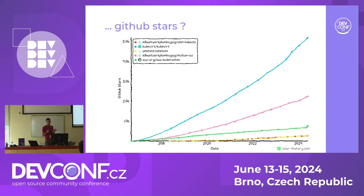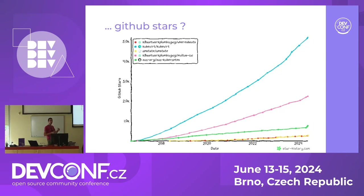One metric that is kind of relevant — I don't think it's the correct metric, but it's easy to find online — is a chart of GitHub stars on a bunch of projects I collaborate with. Whereabouts is one at the bottom, nmstate is also one at the bottom. nmstate gives you a declarative way to configure host networking. Whereabouts is an IPAM CNI plugin — most of this is probably not known to you, so I'm just throwing out words.